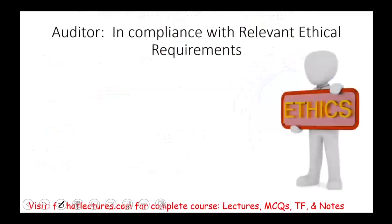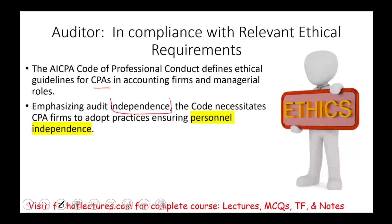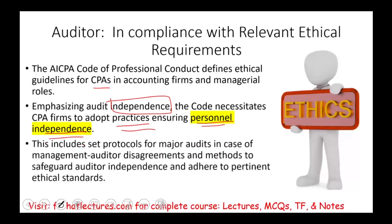Auditors also have to comply with relevant ethical standards. The AICPA Code of Professional Conduct defines ethical guidelines for CPAs and accounting firms, emphasizing audit independence. The code necessitates CPA firms to adopt practices ensuring personal independence, including set protocols for major audits in case of management-auditor disagreement, and methods to safeguard auditor independence and adhere to ethical standards. We're going to have a whole session dedicated to independence.